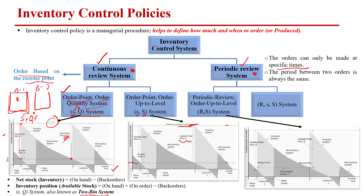Now for the periodic review system — the R,S system, sometimes called the T,S system. Here, we review the inventory level after a fixed time period R or T, and then order up to S. The review time period is fixed — for example, every month or every two weeks — but the order size is variable, because each time we need to bring inventory back up to the maximum level S.